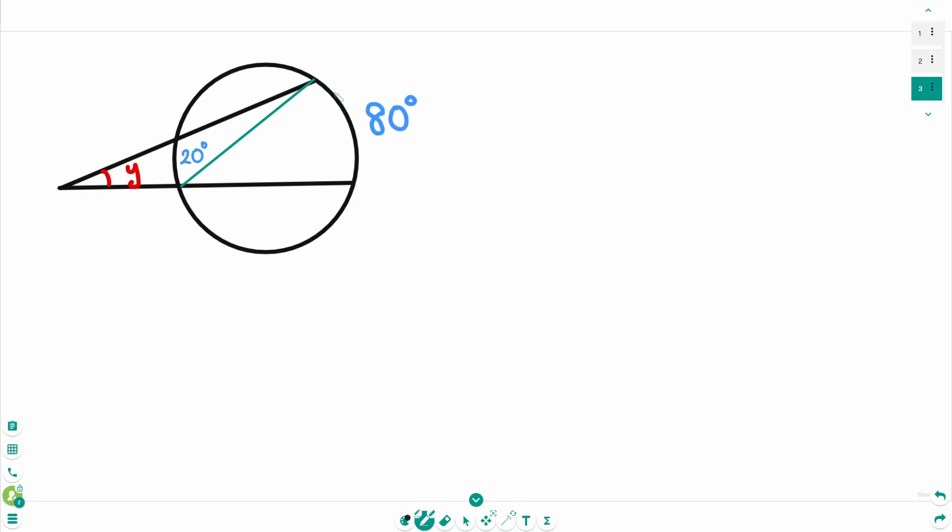Subtended by this arc, the central angle is 80 degrees. That means this inscribed angle is 40 degrees. And subtended by this arc, the central angle is 20 degrees. That means the inscribed angle is 10 degrees.